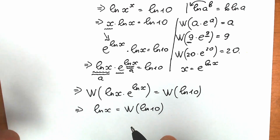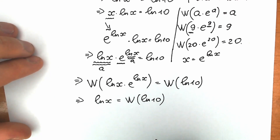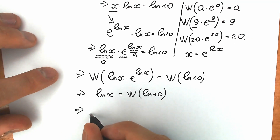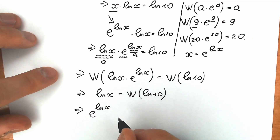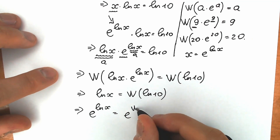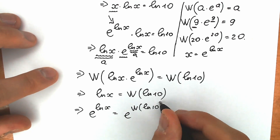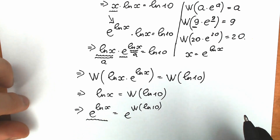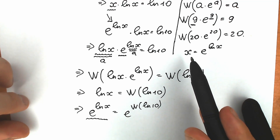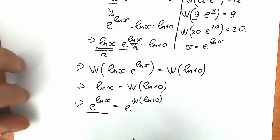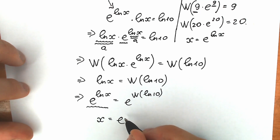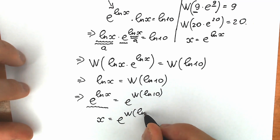But we need to find x, not natural log x. So we apply base e on both sides. We have e to the power natural log x on the left, and e to the power Lambert W of natural log 10 on the right. Now e to the power natural log x equals x — we can cancel the e and natural log. As a result, x equals e to the power Lambert W of natural log 10.